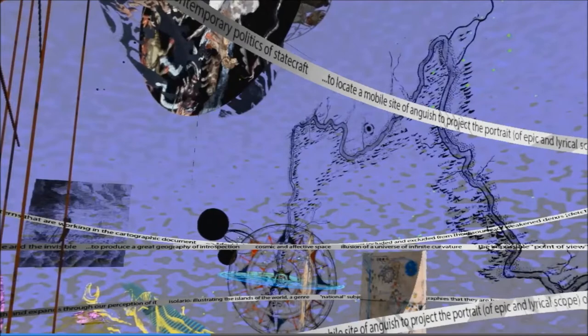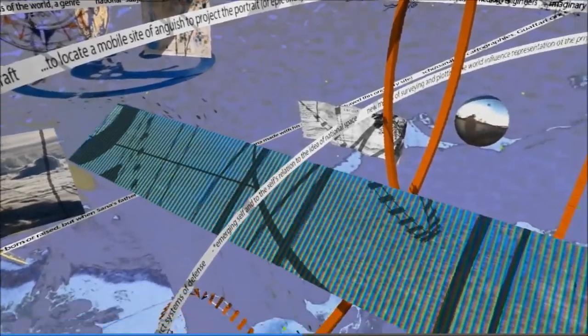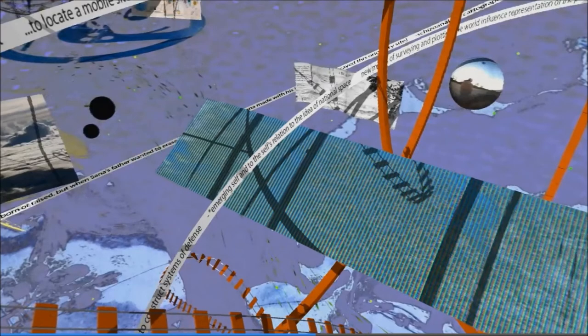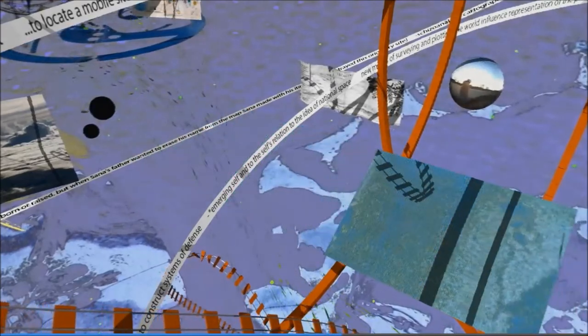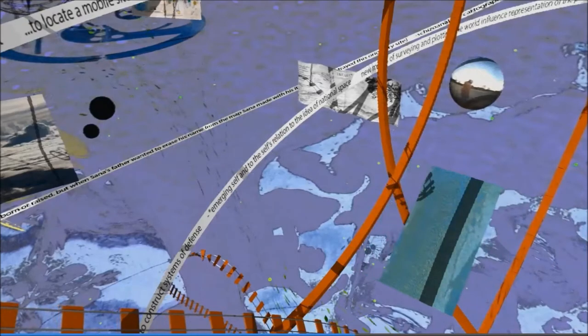In representational art, a saturated reality began to animate paintings. The invention of artificial perspective caused new ways of gridding and plotting the world. There was also a political unification going on in what we called nation building, and to use maps to construct systems of defense was essential. Most importantly, we have the emerging self and the self's relation to the idea of national space.